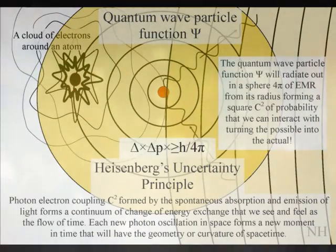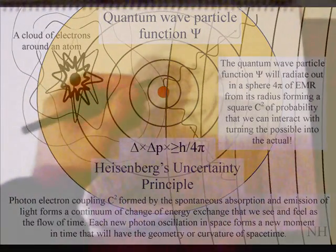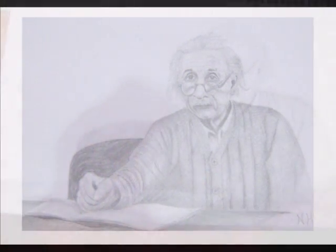In such a theory, the wave-particle duality of light and matter in the form of electrons is forming a blank canvas that we can interact with, forming the possible into the actual.